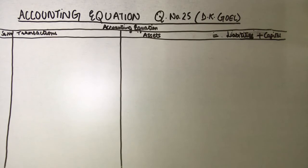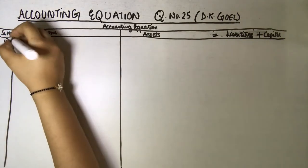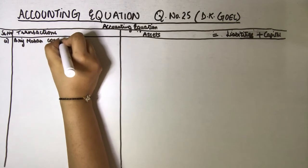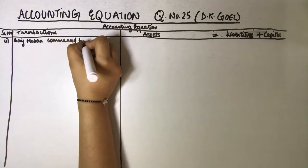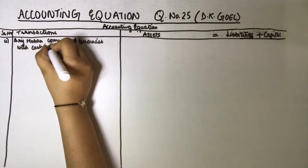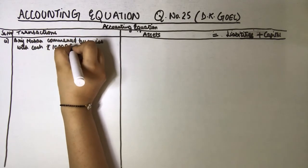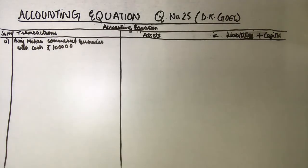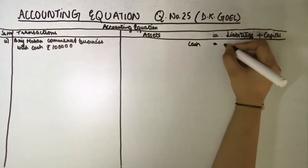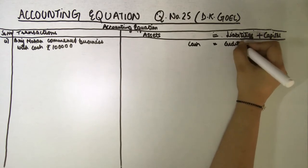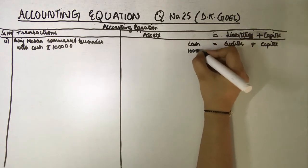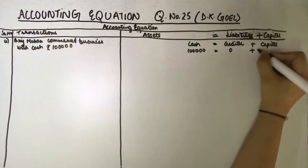The first entry is that Bridge Mohan commenced business with cash. We write the narration. The item that came first is cash under assets, and no creditor, but capital came. So cash is 1 lakh, creditor is 0, and capital is 1 lakh.